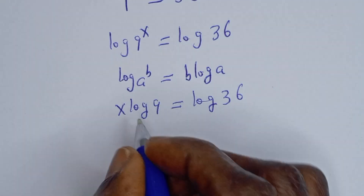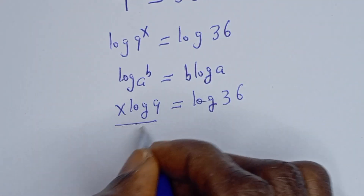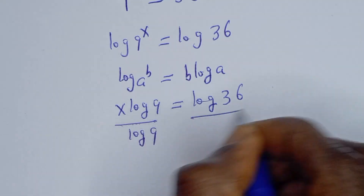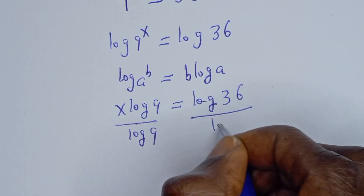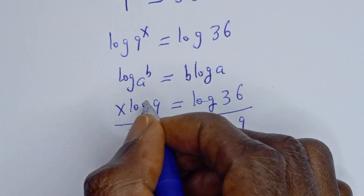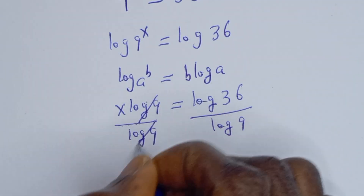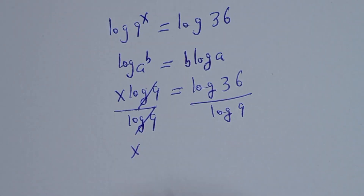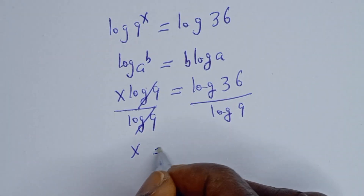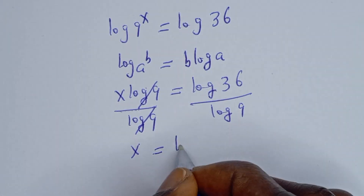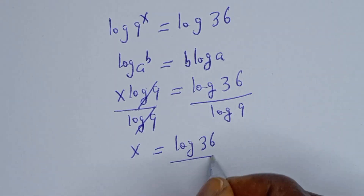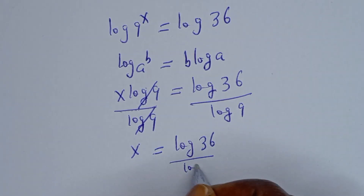Now let's divide both sides by log 9. Dividing by log 9 on both sides will cancel log 9 on the left, giving us s is equal to log 36 over log 9.